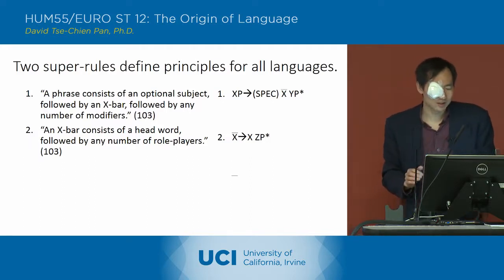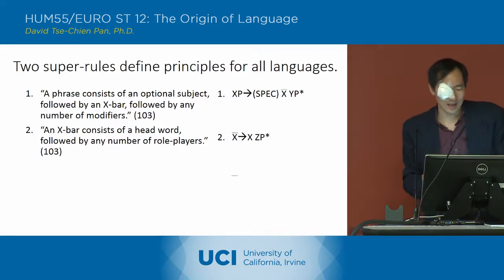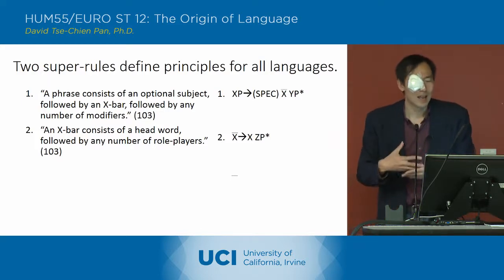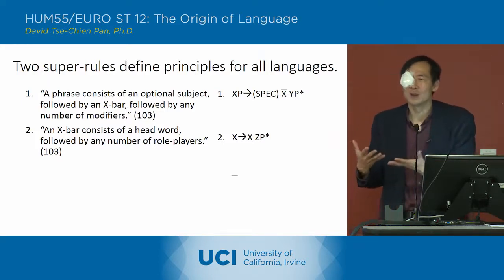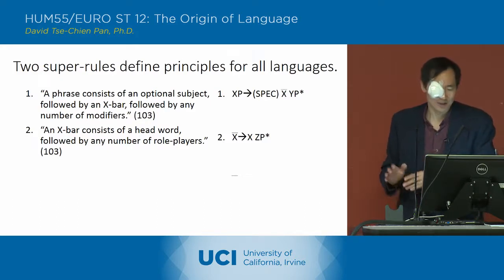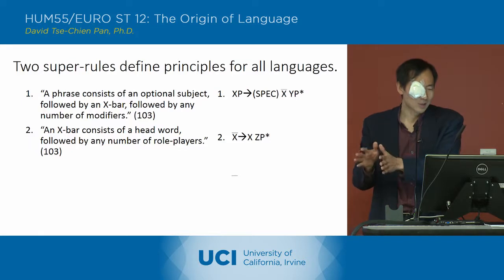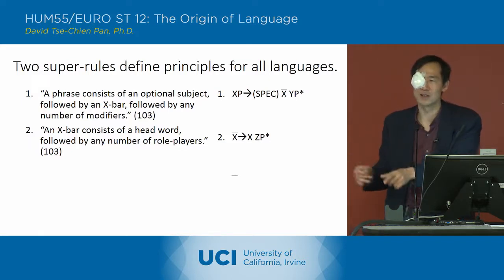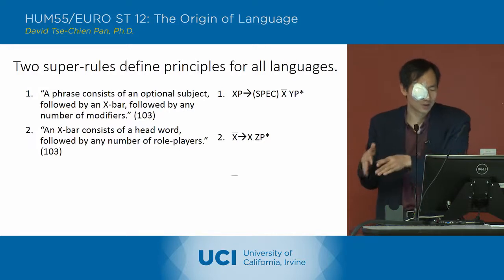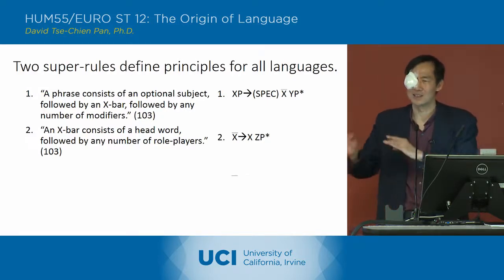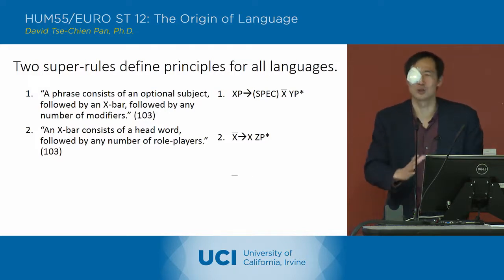An X-bar consists of a head word followed by a number of role players — that's the second rule. So all phrases in all languages follow these two rules: a phrase consists of an optional subject, an X-bar, and modifiers; and every X-bar has a head word followed by role players. He says that structure is common to all languages — these are the two super rules.